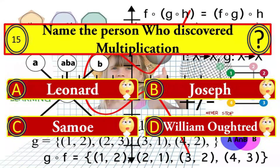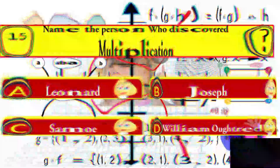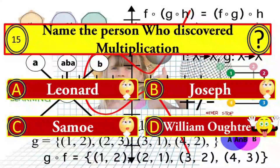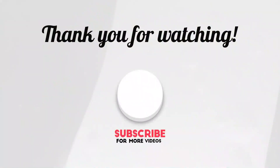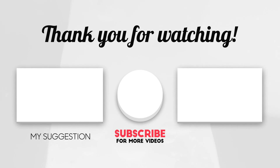Question number fifteen: name the person who discovered multiplication. Your options: A) Leonard, B) Joseph, C) Somayo, and D) William Oughtred. William Oughtred is the right answer. Hey guys, if you like this video, like, share, comment, and don't forget to subscribe to my channel. Okay friends, we will meet in the next video — until then, take care, bye!